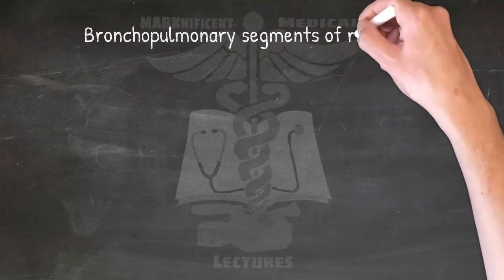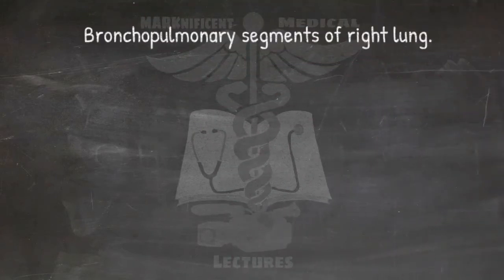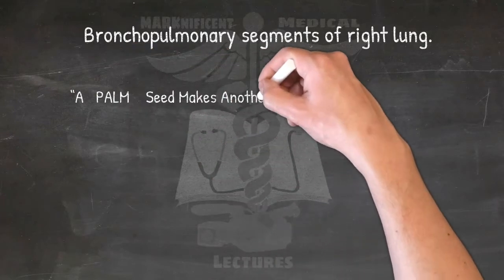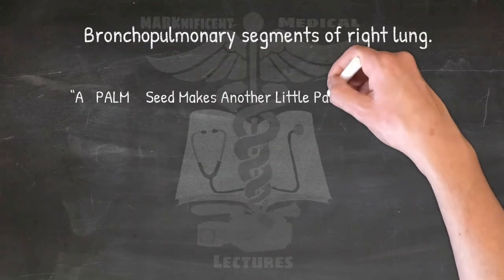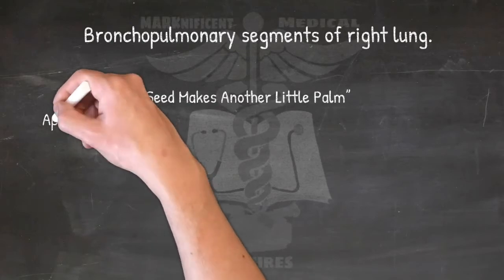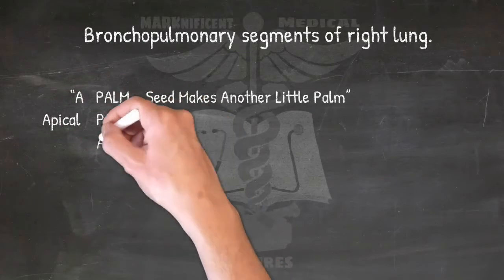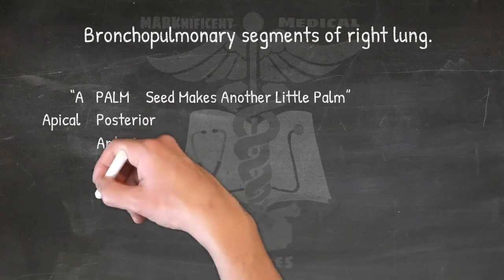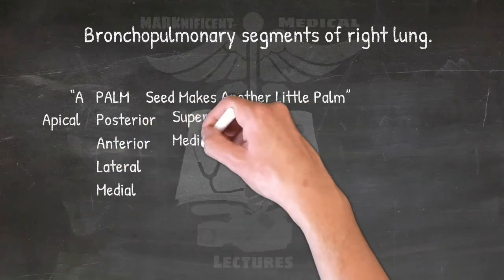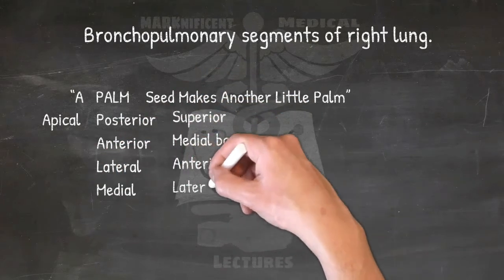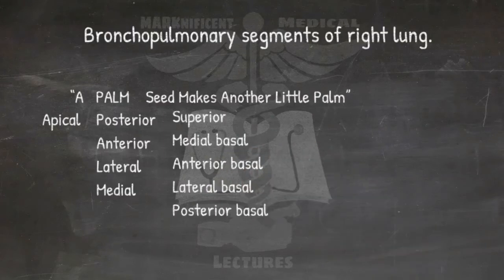For the bronchopulmonary segments of the right lung, use: 'A palm seed makes another little palm.' In order from superior to inferior: apical, posterior, anterior, lateral, medial, superior, medial basal, anterior basal, lateral basal, and posterior basal.